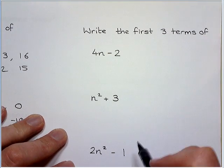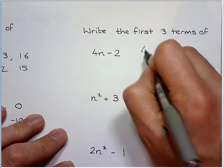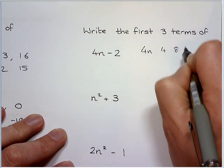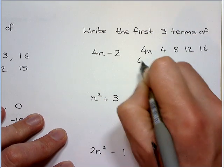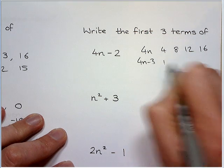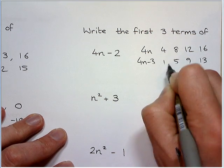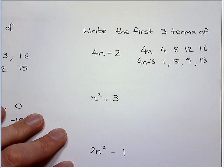Sometimes they ask you to write the first 3 terms. So 4n is 4, 8, 12, 16. So 4n take away 3 is 1, 5, 9, 13. It's 3 less than the 4 times table.